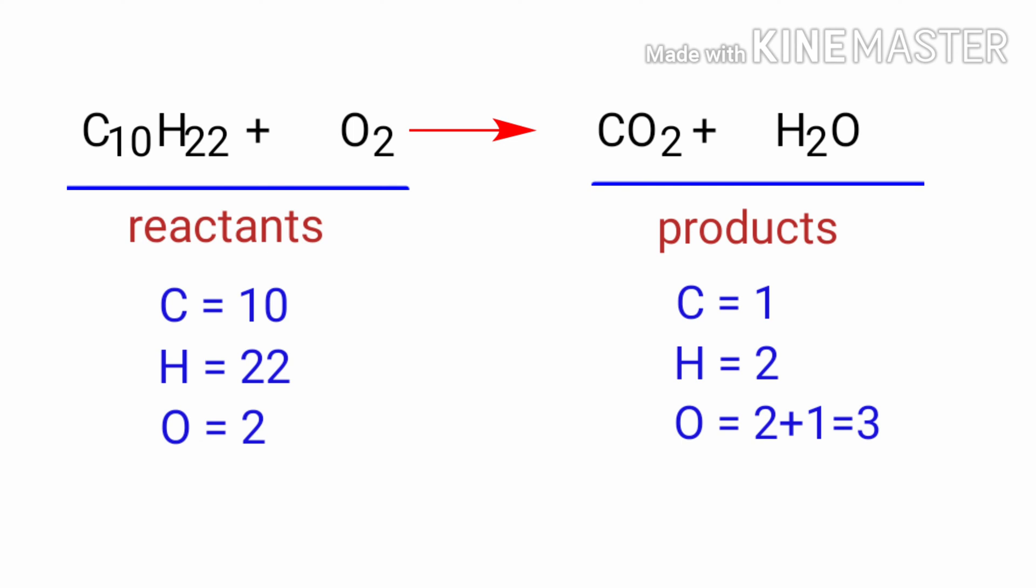To balance the chemical equation, we need to make use of coefficients. A coefficient is a number that we place in front of a chemical formula.